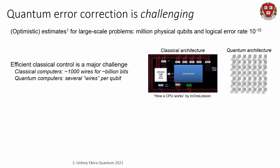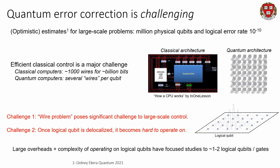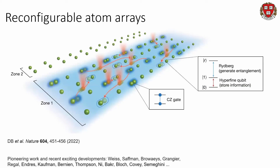Efficient classical control has been a major challenge. In classical computers, we've gotten very good at taking something on the scale of thousands of wires to control billions of bits inside a processor. With the quantum systems built so far, they've been built mostly qubit by qubit, adding more connections and wires for each qubit you want to control. This so-called wire problem has posed a major challenge to large-scale control. Another key challenge is that once a logical qubit becomes delocalized, it becomes really hard to do operations on it — it's protected from the environment but also protected from other logical qubits.